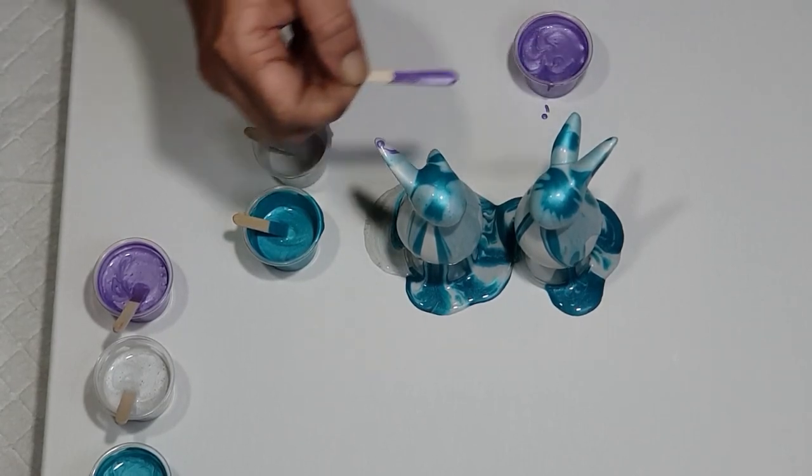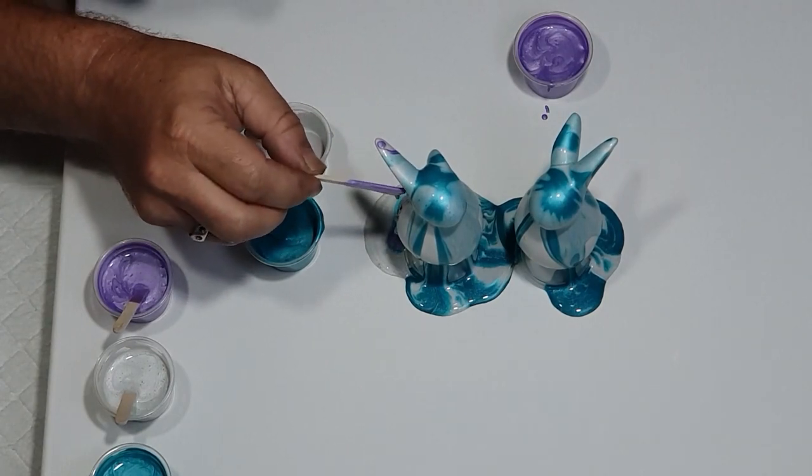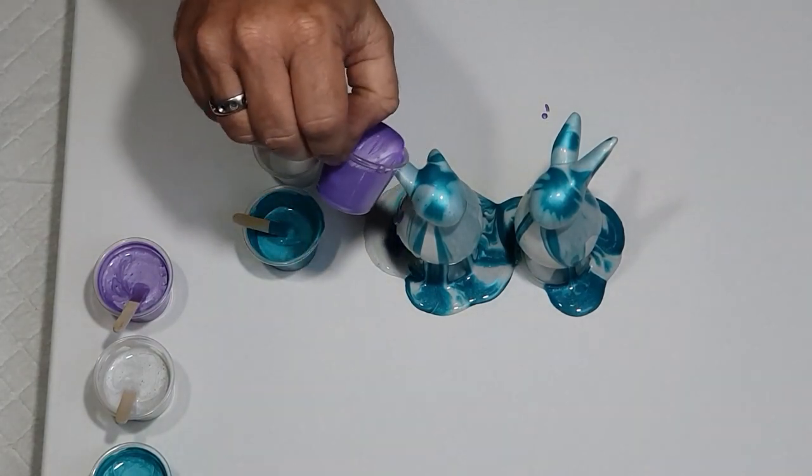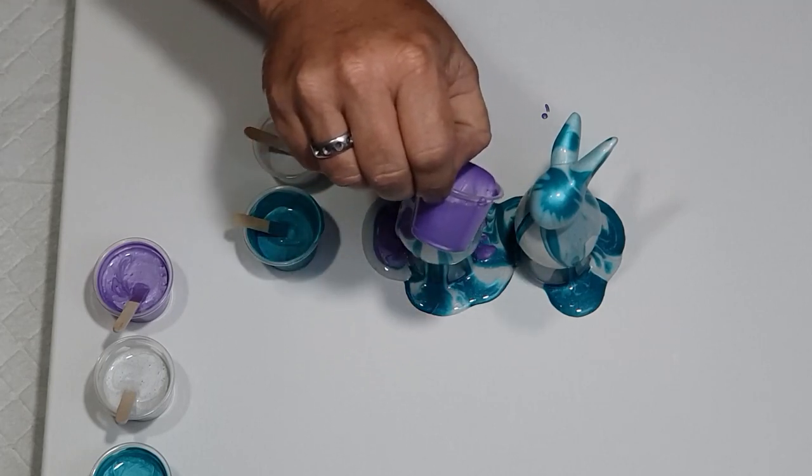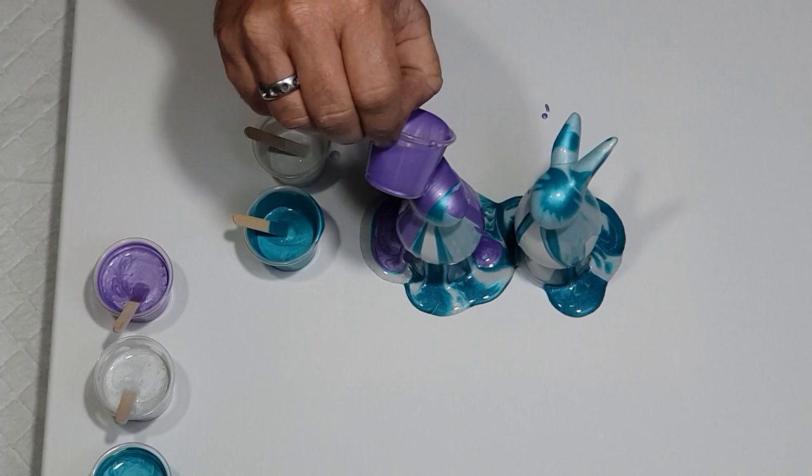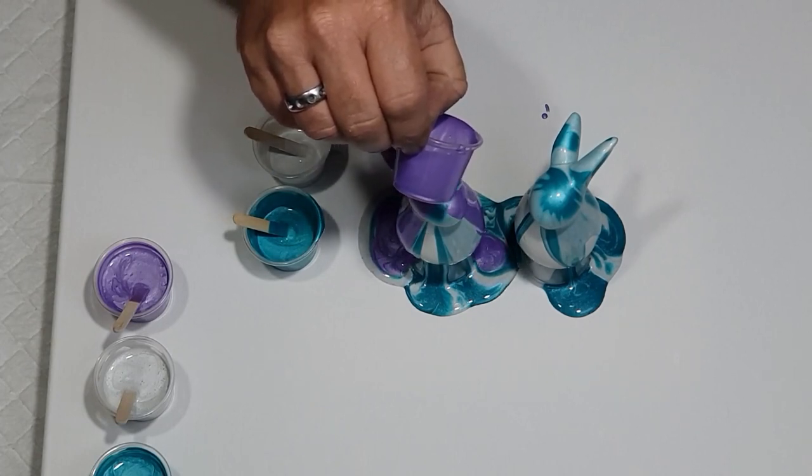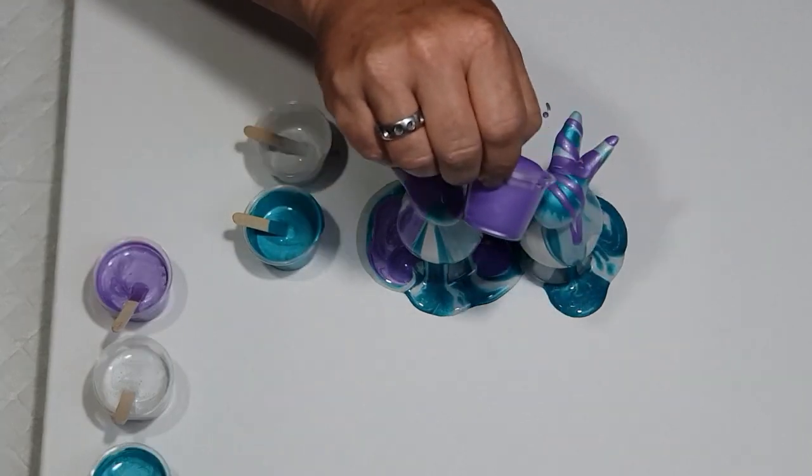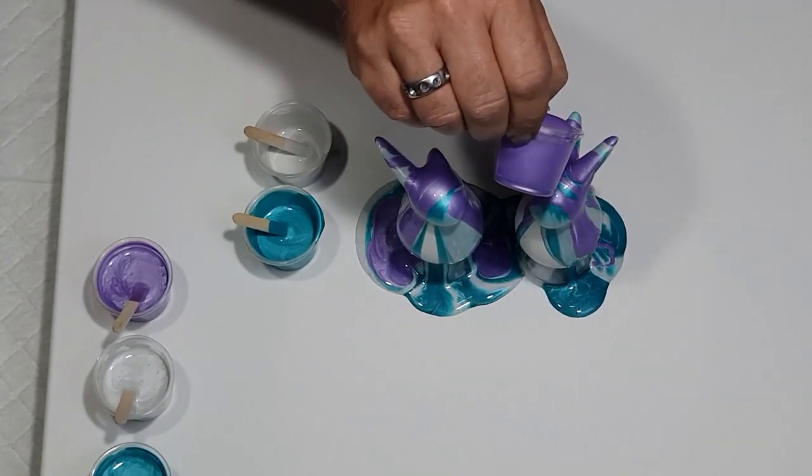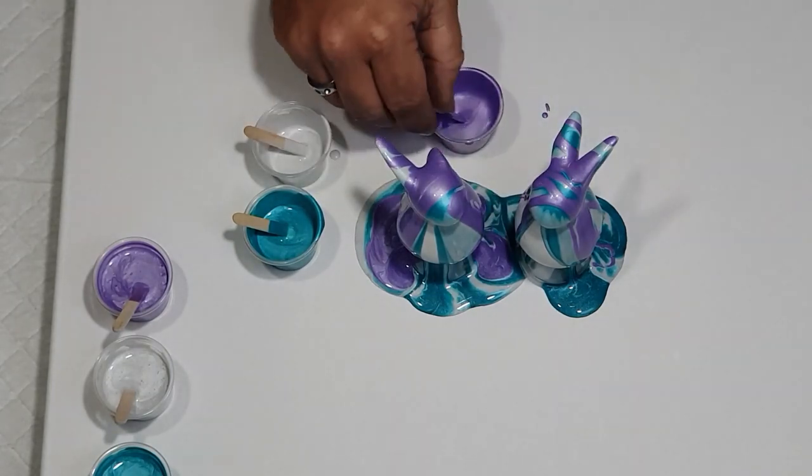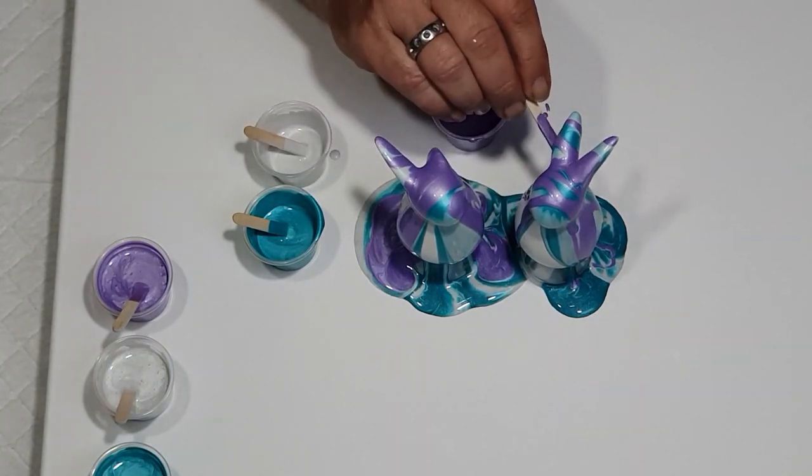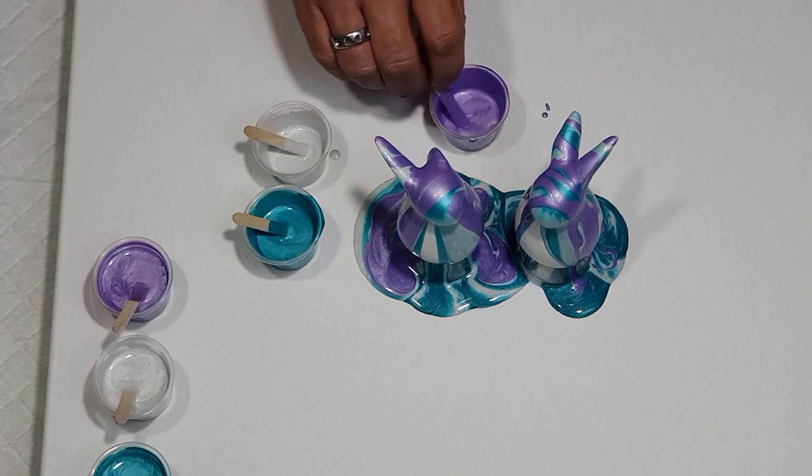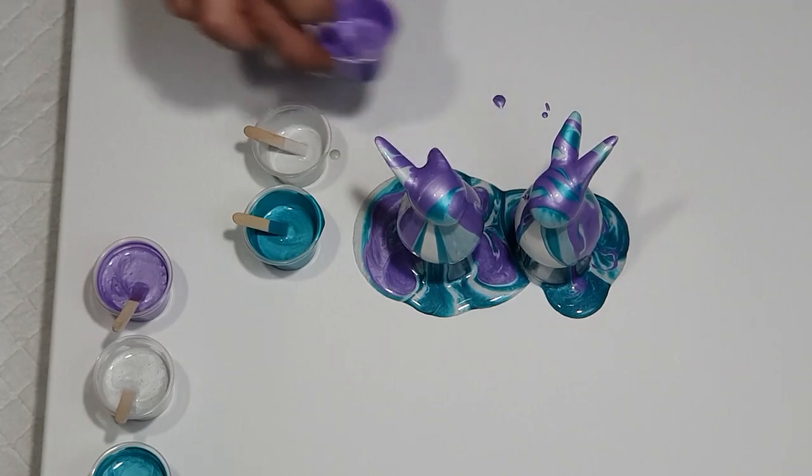Now we can drizzle more over the top. It doesn't matter if you cover up a bit that you like - as you pour more you will get all different effects come through. Sometimes the paint just doesn't want to roll over a ceramic part, so you help it along a little bit and then the paint will continue to flow over that section.